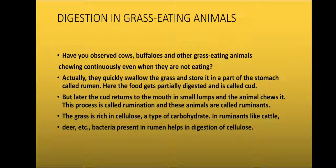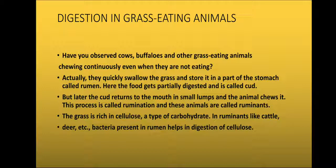Animals that perform rumination are called ruminants. The grass these animals eat is rich in cellulose, which is a type of carbohydrate. In ruminants like cattle and deer, certain bacteria are present which help these animals to digest cellulose. Human beings do not have this bacteria.